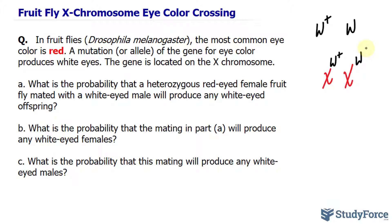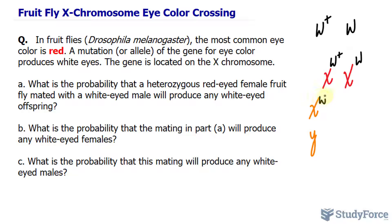So the genotype for this female is W-plus and W. The male will have the X and Y chromosome, and because it has white eyes, the allele associated with its X chromosome would be W without the plus. Let's go ahead and cross these.